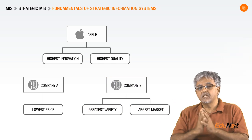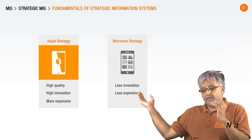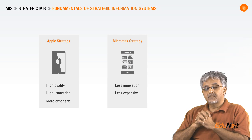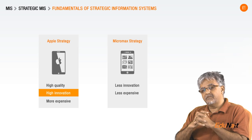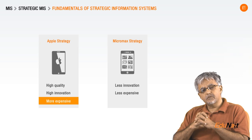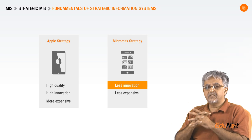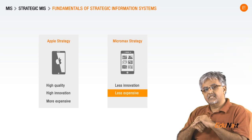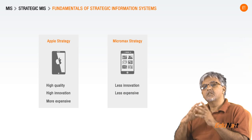You can come up with lots of different strategies. Consider the Apple iPhone versus a Micromax smartphone. Apple phones are very high quality, very innovative, always the first to come up with a variety of features, and they also cost a lot — high quality, high innovation, and high cost. Micromax, on the other hand, doesn't generally lead with new features, but they cost less. They are some of the least expensive smartphones on the market. Two different strategies.